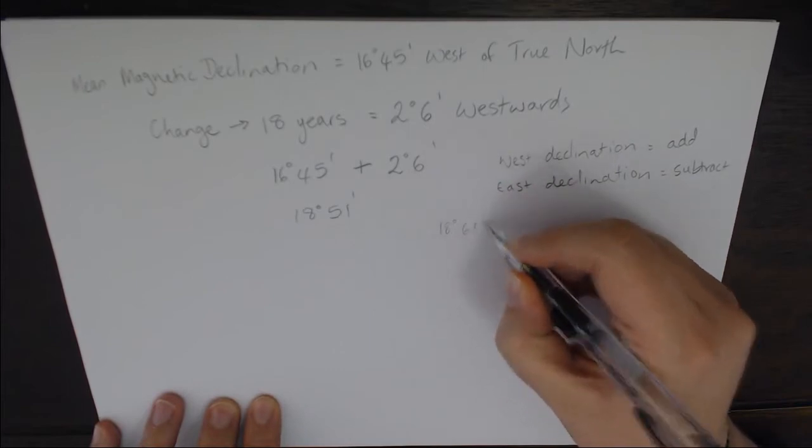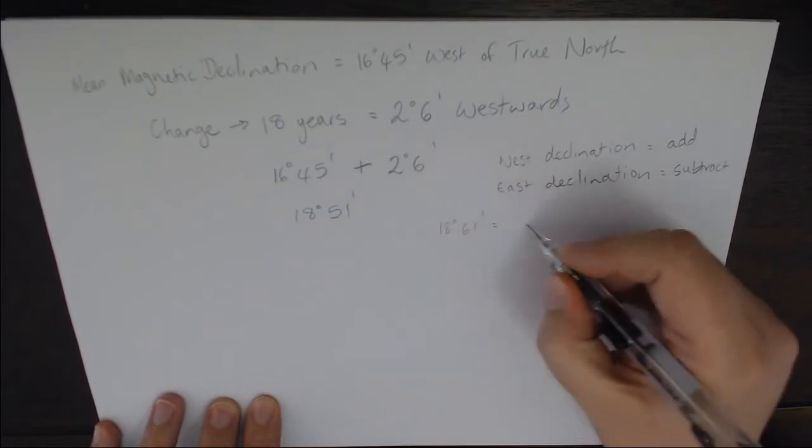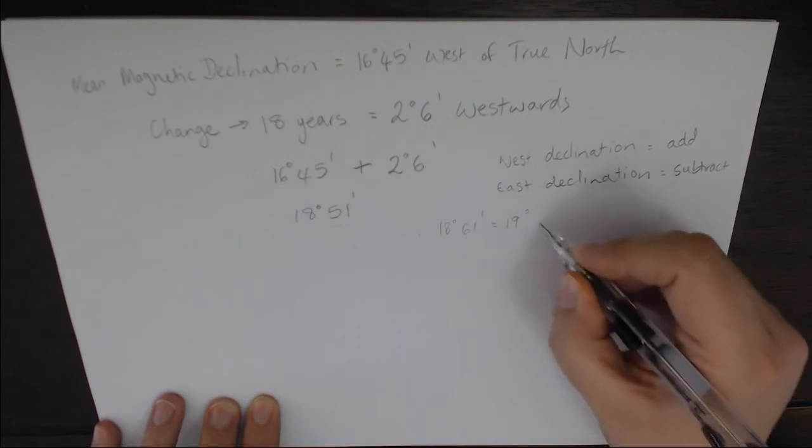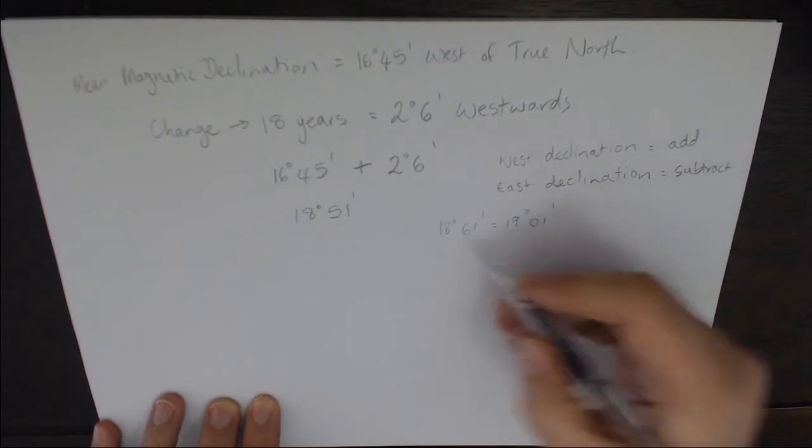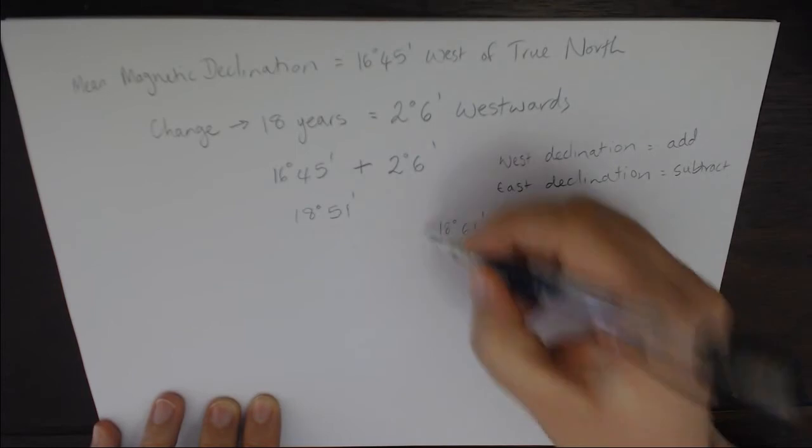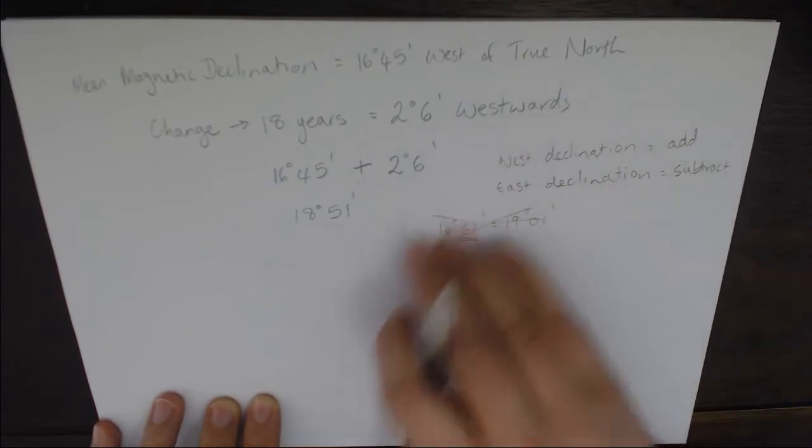Now hypothetically, if we did a calculation and landed up with 18 degrees and 61 minutes, we don't have 61 minutes in a degree, so you would have to convert that and move it over to be 19 degrees. But that's not important for this one.